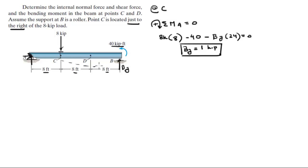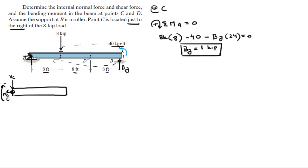Now let's do C. We're going to use this section — cutting the assembly right at C. This is the shear, this is the normal, and this is the moment at C. We have BY and a moment of 40 kip-foot on the right. Remember, point C is located just to the right of the 8 kip load, so if you cut at C, the 8 kip load will be on the section to the left — not in this right-side diagram.